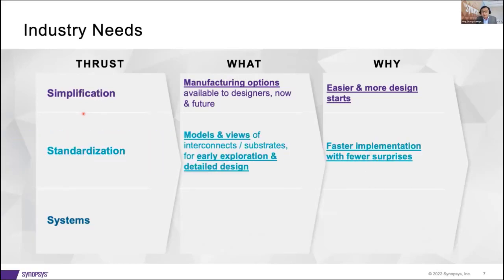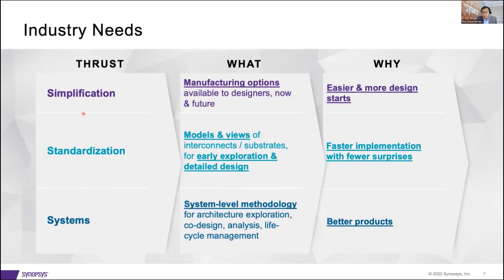Standardization — we have a great deal today, but there needs to be more. We should establish models and views of connectors and substrates for both early exploration and later-stage detailed design, so you're able to create implementation faster with fewer surprises later. And systems — at the end of the day, we're not making wires or creating substrates; we're creating better products that work better, make people happy, and may last longer. So we as a community, as an ecosystem, as an industry, need to provide a system-level methodology for exploration, design analysis, and lifecycle management.